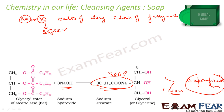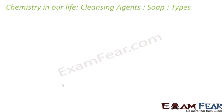All these soaps are made by boiling fats or oils. There are various types of soap: toilet soap, floating soap, transparent soap, medicated soap, shaving soap, laundry soap, and utensil soap. Let's discuss these one by one.